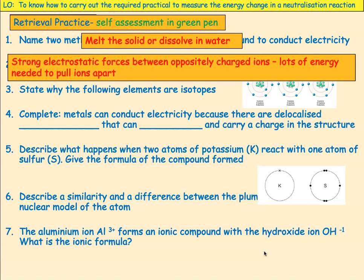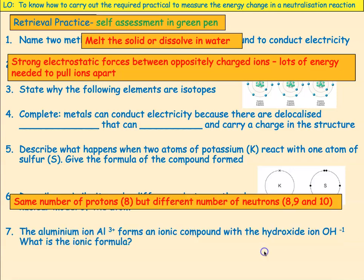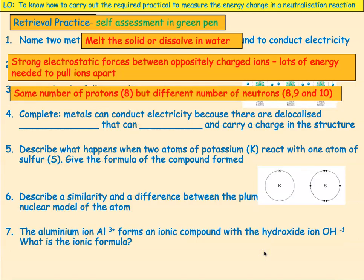State why the following elements are isotopes. An isotope is where you have the same number of protons but a different number of neutrons. They all have eight protons but different numbers of neutrons: the first one's got eight, the second one's got nine, and the third one's got ten.